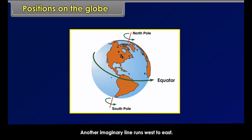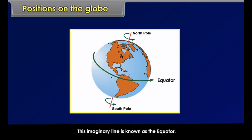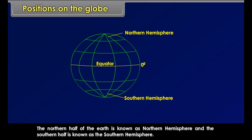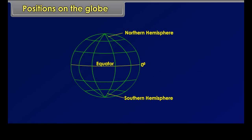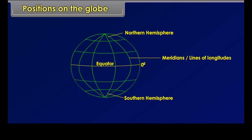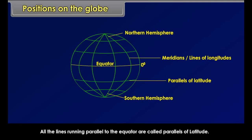The axis is inclined at an angle of 66 and a half degrees towards the east. Another imaginary line runs west to east. It divides the earth into two equal parts. This imaginary line is known as the equator. The northern half of the earth is known as the northern hemisphere and the southern half is known as the southern hemisphere. Lines which join the north pole and the south pole and run in a north-south direction are called lines of longitudes or meridians.